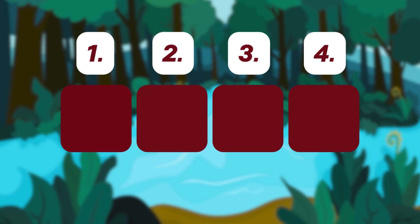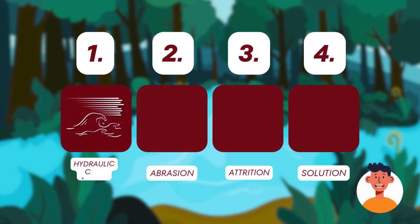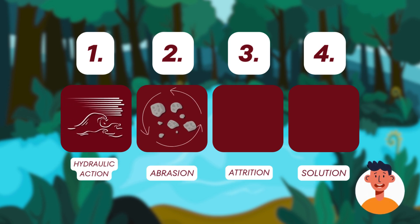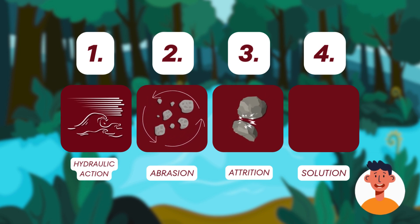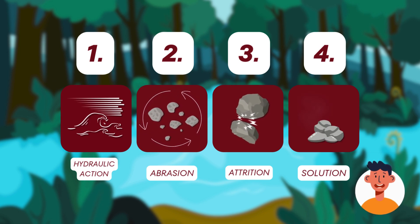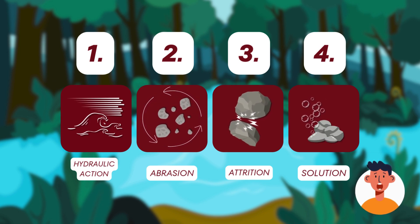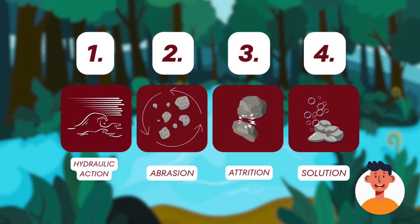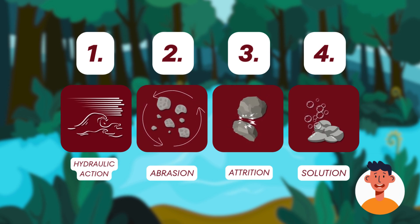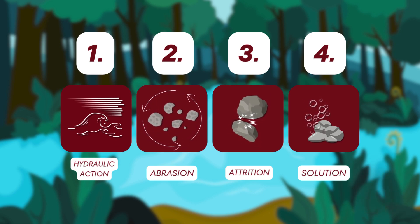Now you understand the four types of erosion, each playing a crucial role in shaping our landscapes. Whether it's powerful waves breaking cliffs, pebbles smoothing riverbeds or acidic water dissolving rocks, these processes are constantly changing the world around us.